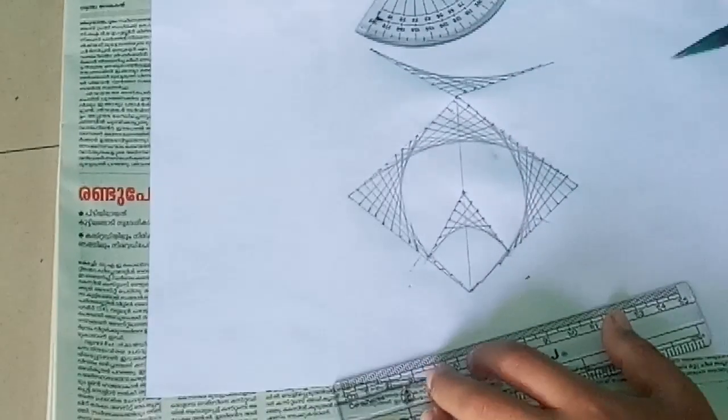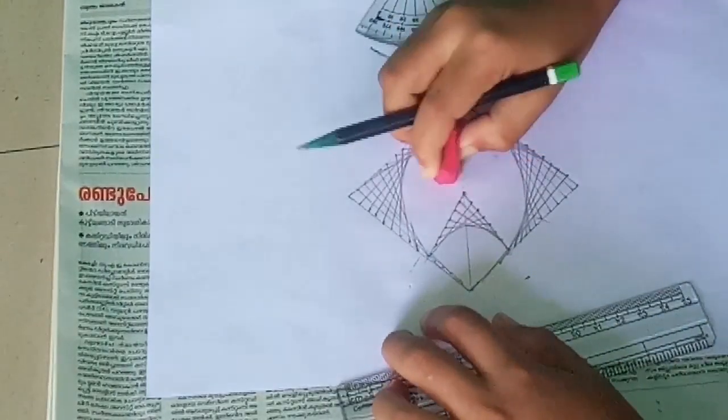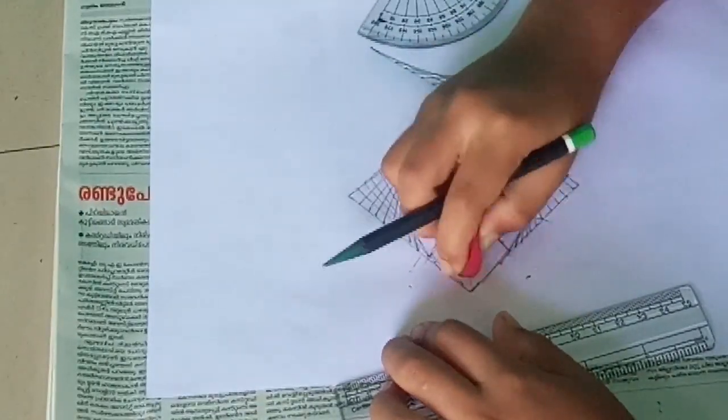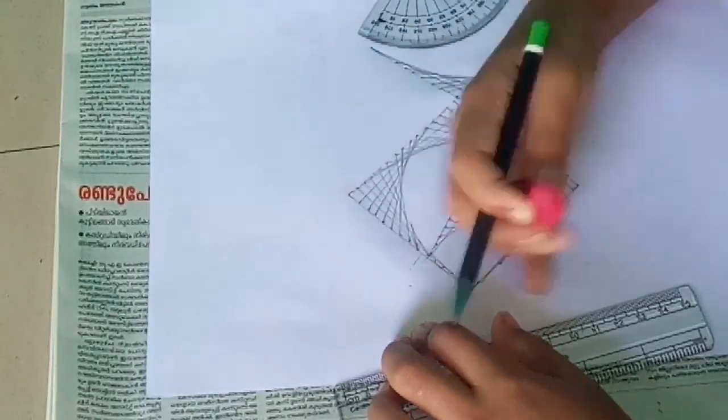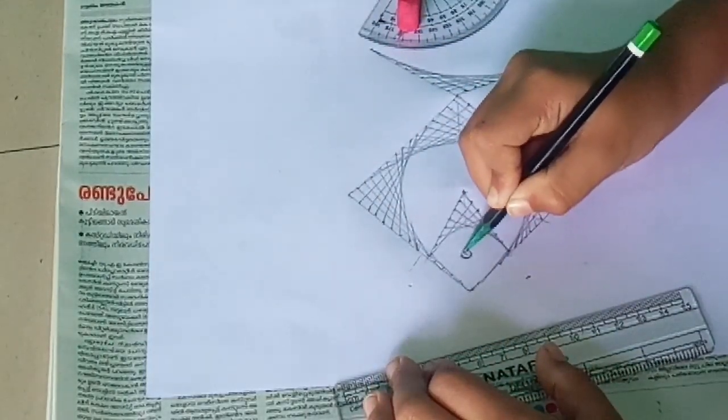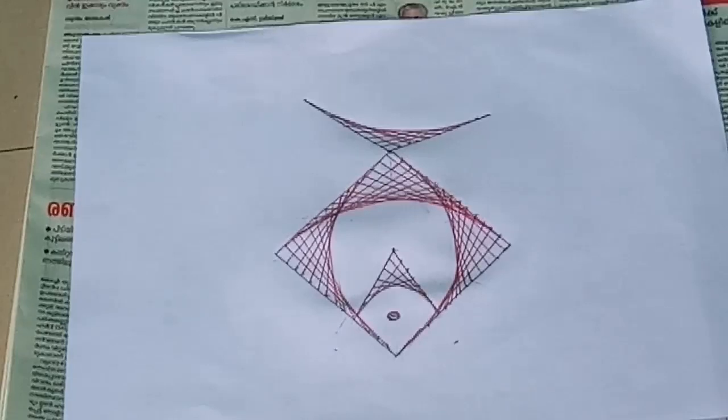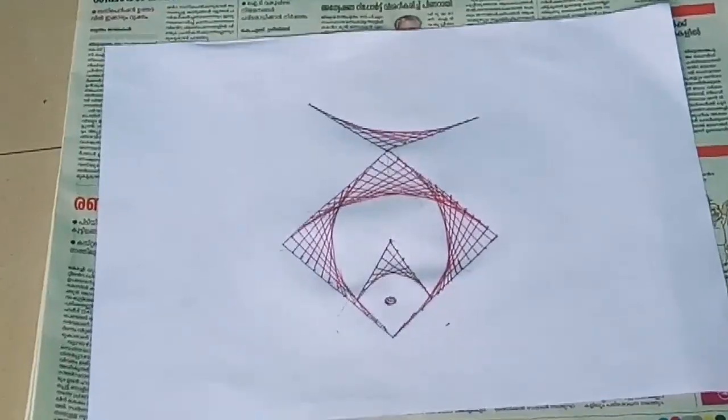Then erase unwanted lines and put an eye. Now a beautiful geometric fish pattern is ready. You can draw this fish pattern in math fair competitions.